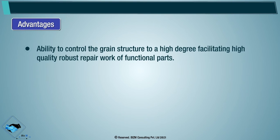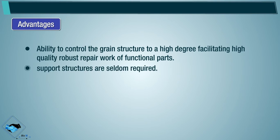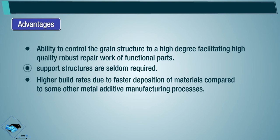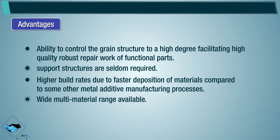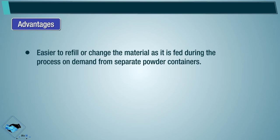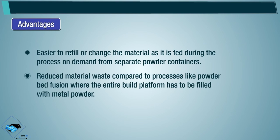Advantages: ability to control grain structure to a high degree, facilitating high-quality robust repair work of functional parts. Support structures are seldom required. Higher build rates due to faster deposition of materials compared to some other metal additive manufacturing processes. Wide multi-material range available. Compared to PBF, larger metal parts can be built. Easier to refill or change the material as it is fed on demand from separate powder containers. Reduced material waste compared to powder bed fusion where the entire build platform must be filled with metal powder.